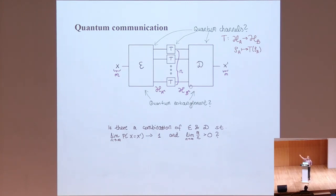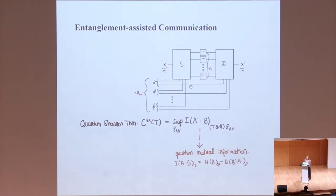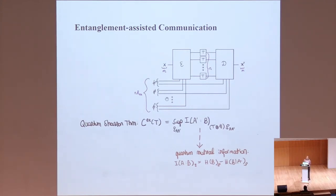This can be asked more generally also for quantum situations. You could have a wire that has quantum properties, and you want to communicate between maybe two distant parts of a quantum chip or two quantum chips. You can still ask if you can find a good encoder and a good decoder such that your success probability of transmitting a message still approaches 1 at a non-zero rate. Here we're going to talk about quantum entanglement-assisted communication, where the encoder and decoder have access to entanglement.